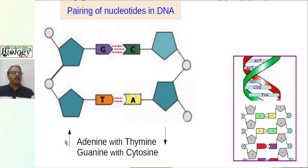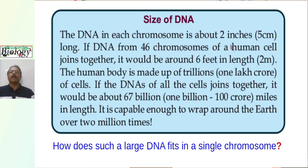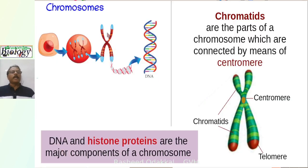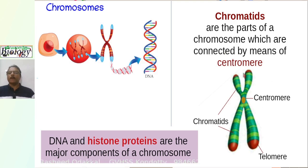Also, see the direction of the strands — one is upward and the other is downward. The DNA in each chromosome is about 5 cm long, and in our 46 chromosomes of a cell, it will be around 2 meters in length. How does such a large DNA fit in a single chromosome? A chromosome contains mainly DNA and histone protein. This is a paired chromosome where the pairing occurs at the centromere, and the wing-like parts are known as chromatids.